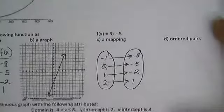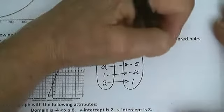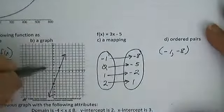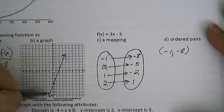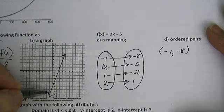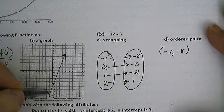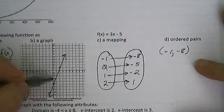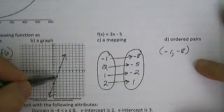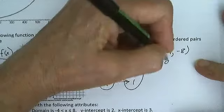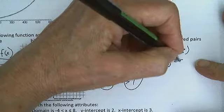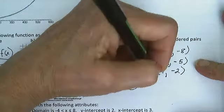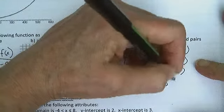And in ordered pairs, I have negative 1 comma negative 8, that's on my line. 0 comma negative 5, 1 comma negative 2, and 2 comma 1.